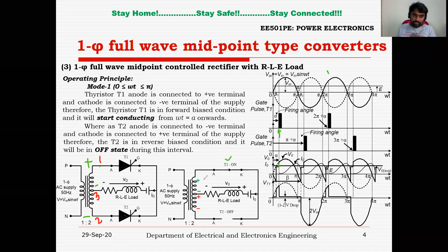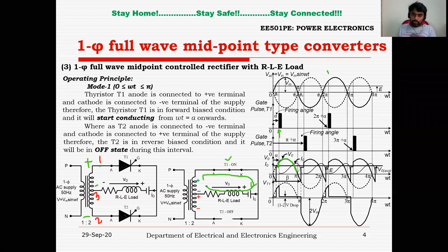T1 is in conduction state and the current always leaves from the source positive terminal, through T1 anode, T1 cathode, and back to the source through the load. The positive terminal is connected to positive. So you are getting some voltage across the load which is following the input voltage — the output voltage (darkened line) is following the dotted line.